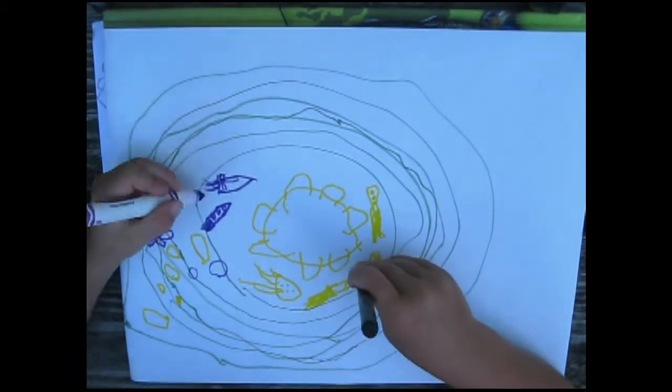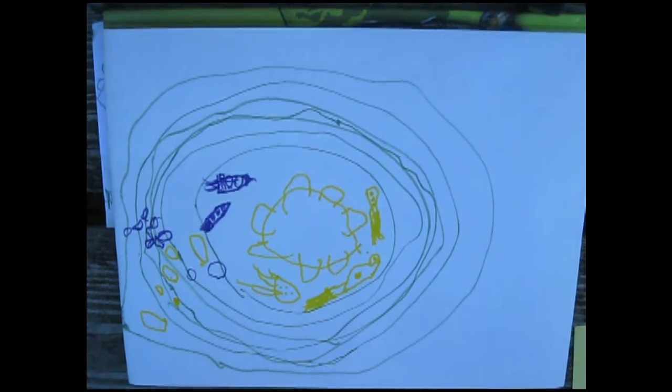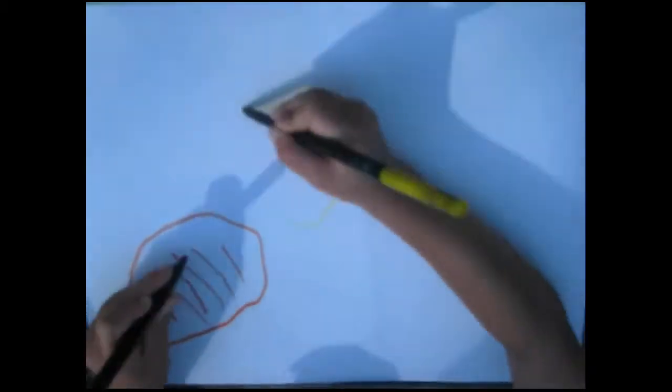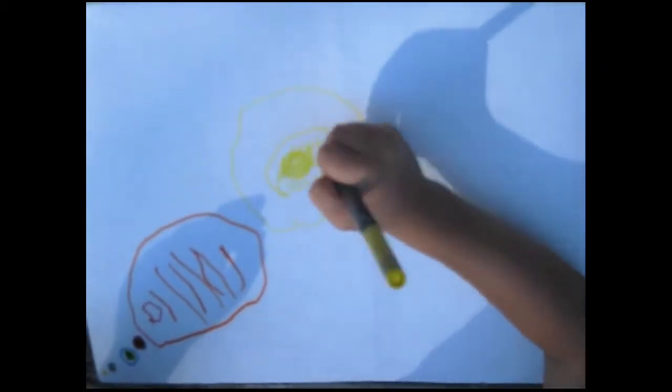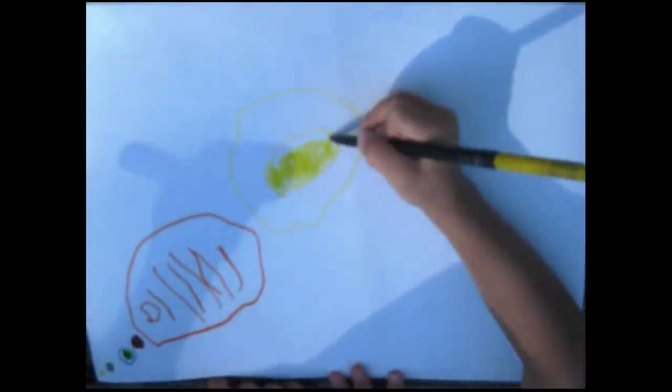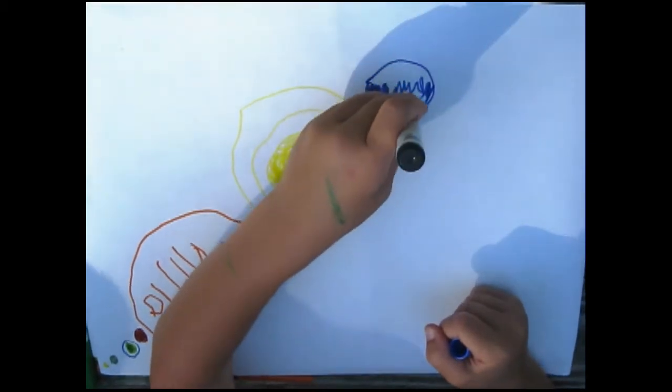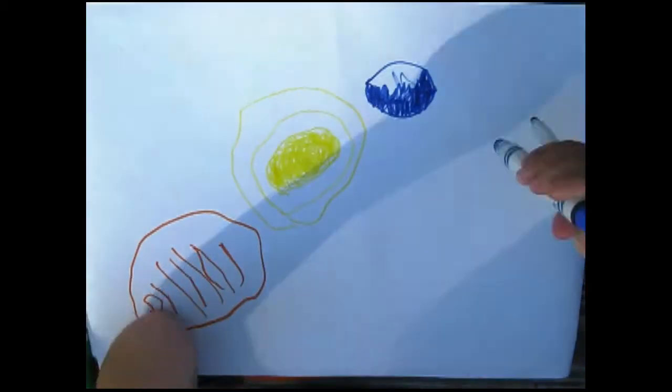The planets circle around the sun. Mercury. Venus. Earth. It's a planet. And I draw it. Mars. Jupiter. Saturn. I love it. Uranus. Neptune.